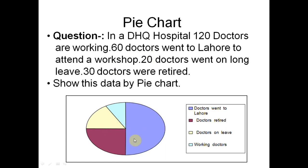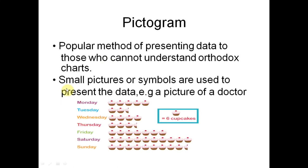A pictogram represents data using pictures or symbols. For example, cupcakes sold per day: Monday, Tuesday, Wednesday shown with cupcake images. If the data is large, each picture symbol can represent multiple units — for example, one cupcake image represents 6 cupcakes. So Monday showing 5 cupcake images means 30 cupcakes sold, and Saturday showing 10 images means 60 cupcakes sold.